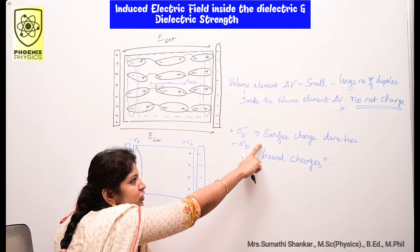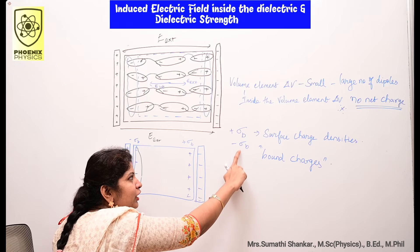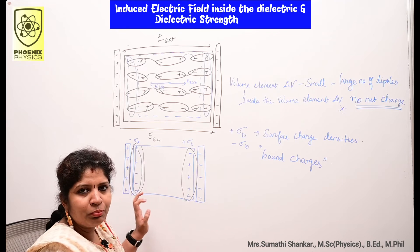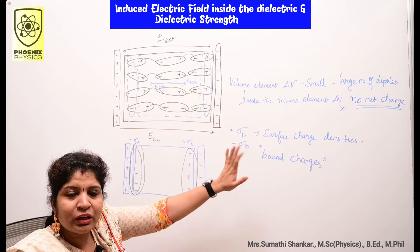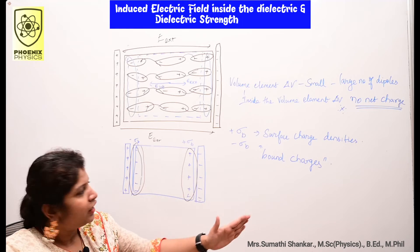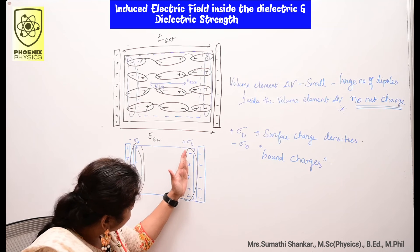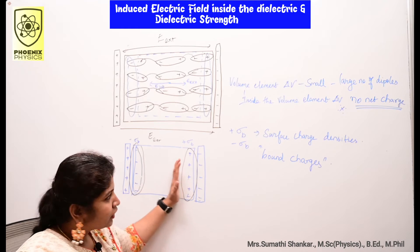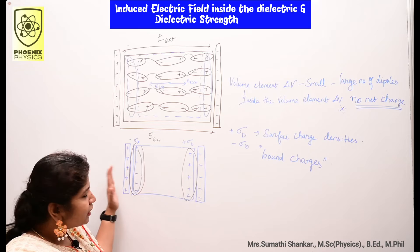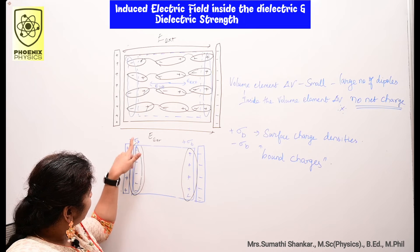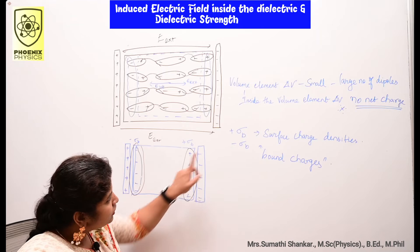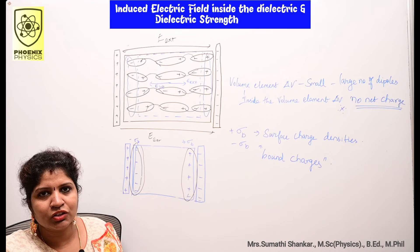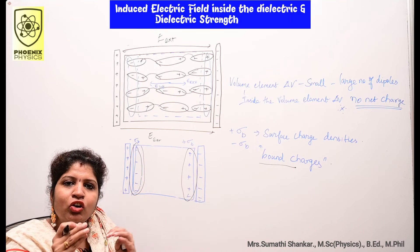So the dielectric in an external electric field is equivalent to two oppositely charged sheets whose surface charge densities are plus sigma-b and minus sigma-b. The positive charges on the right side of the surface give plus sigma-b, and the negative charges on the left side give minus sigma-b. These are called bound charges.